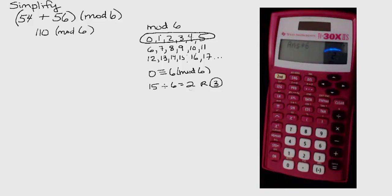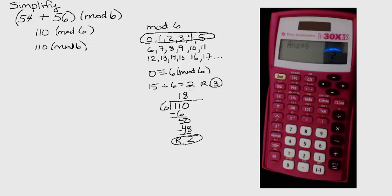This confirms what we would find if we would divide 110 by 6 using long division. 6 goes into 11 once. 1 times 6 is 6. Subtracting leaves 5. Bring down the 0. 6 goes into 50, 8 times. 6 times 8 is 48. Subtracting, we are left with a remainder of 2. Either way you work it, 110 mod 6 is congruent to 2 mod 6.